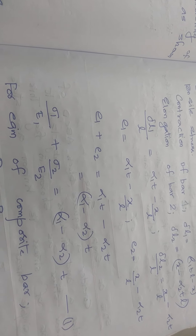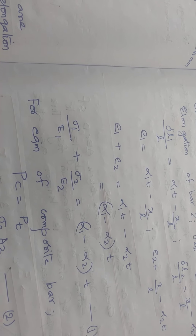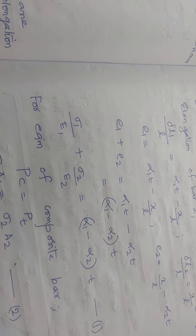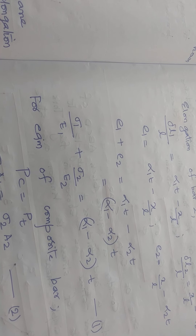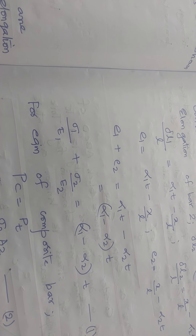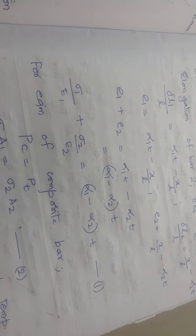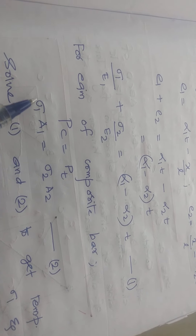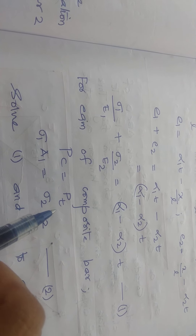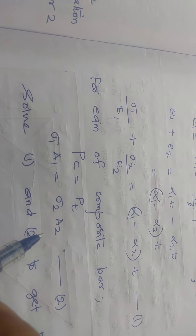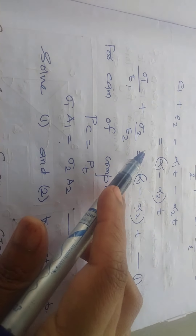This is the expression for temperature stresses in a composite bar: sigma 1 / E1 + sigma 2 / E2 = (alpha 1 − alpha 2) × T. One bar is subjected to compressive stress and the other to tensile stress. For equilibrium of the composite bar, Pc should equal Pt, that is sigma 1 × A1 should equal sigma 2 × A2. Using these two equations, we can find the temperature stresses sigma 1 and sigma 2.